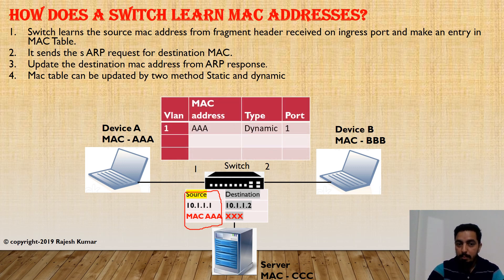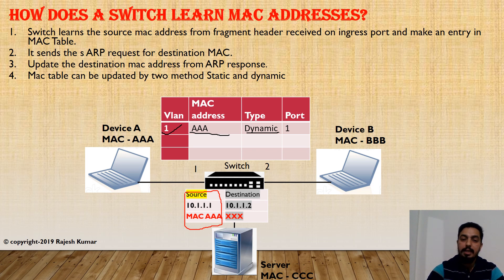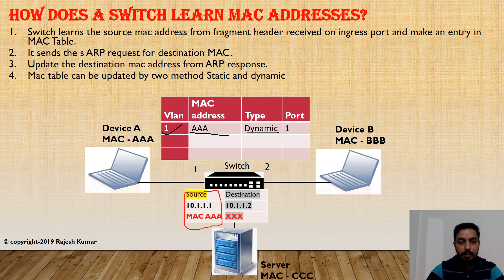Once the switch receives this information, it first looks at the source information and updates that entry into the MAC table. The switch adds four pieces of information: first, which VLAN the device is connected to — in our case VLAN 1, the default VLAN; second, the MAC address; third, the type — either dynamic or static. Dynamic is what we are discussing now; static is when you manually add the MAC entry. Finally, it adds the port number — this device with MAC address AAA is connected on port 1.